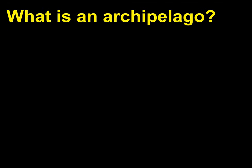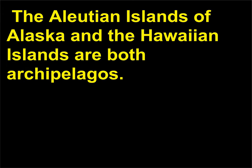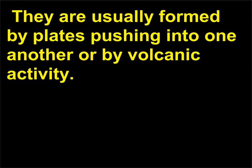What is an archipelago? An archipelago is a chain, or group, of islands that are close to one another. The Aleutian Islands of Alaska and the Hawaiian Islands are both archipelagos. They are usually formed by plates pushing into one another or by volcanic activity.